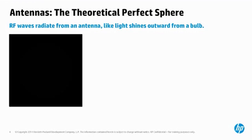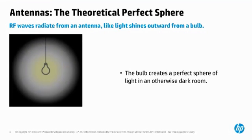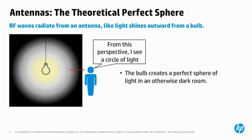An antenna is a device that radiates RF waves out into the atmosphere in a particular pattern. This is similar to how a light shines outward from a light bulb. Imagine being in a room that is completely dark, except for a single light bulb in the center of the room. This bulb radiates light equally in all directions, creating a perfect sphere of light. If you stood straight up and looked at this light, you would see a so-called elevation view, and it would be in the shape of a perfect circle.